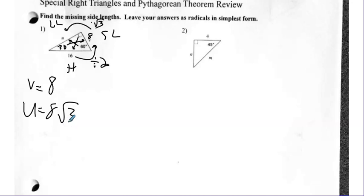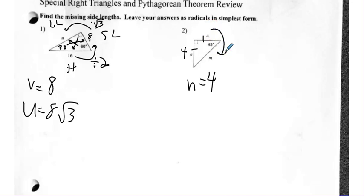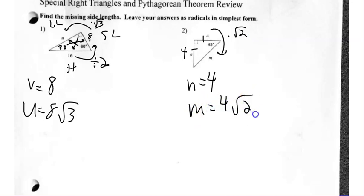Number two is a 45-45-90. These two are the legs — they are equal to each other. So if one is four, this is four. And then how I go from a leg to a hypotenuse, I simply multiply by radical two. So M equals four radical two.